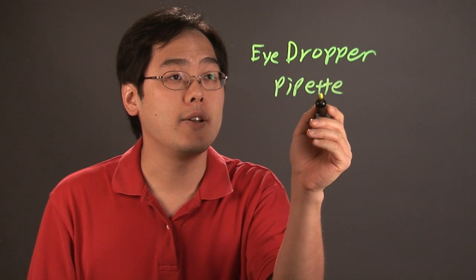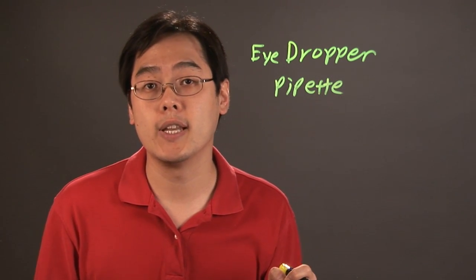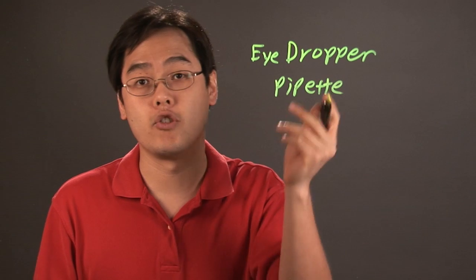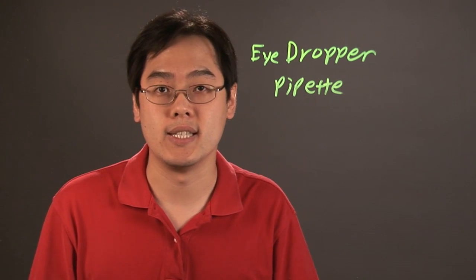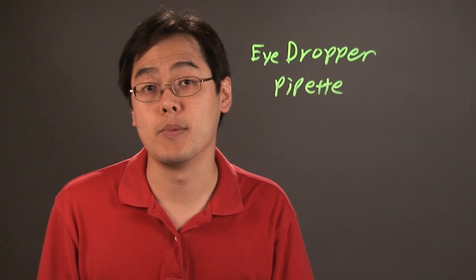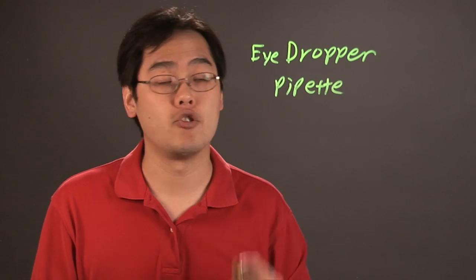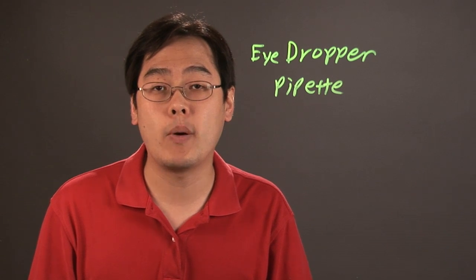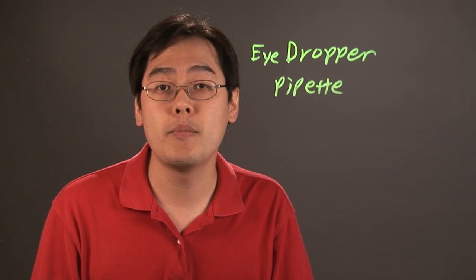An eyedropper and pipette are really useful for measuring fractions of milliliters. It helps further if the pipette or dropper has tiny measurement markings, so you can see exactly how many fractions of milliliters you need. Basically, the best devices are the dropper and the pipette. I'm Jimmy Chang, and that answers the question: how can I measure a fraction of a milliliter?